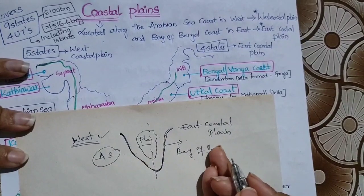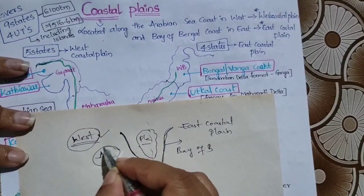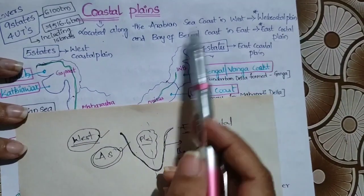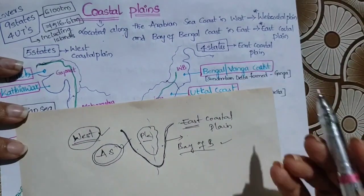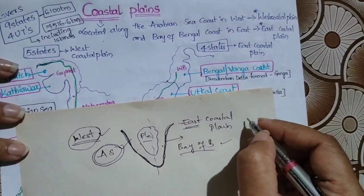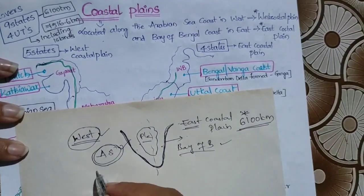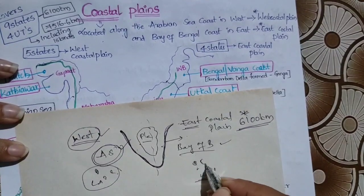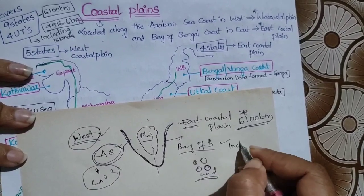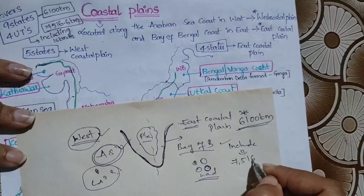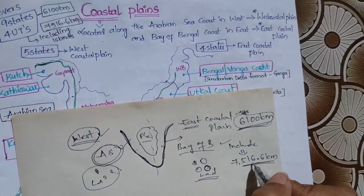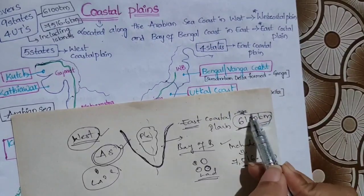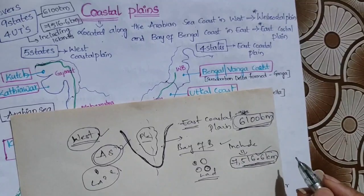The West Coastal Plains are near the Arabian Sea and the East Coastal Plains are near the Bay of Bengal. The total coastline border length is 6,100 kilometers for the mainland. But including islands — Lakshadweep Islands and Andaman-Nicobar Islands — the total length is 7,516.6 kilometers, often rounded to 7,517 in textbooks.